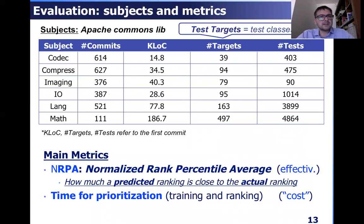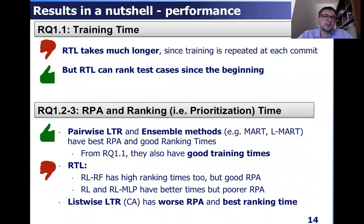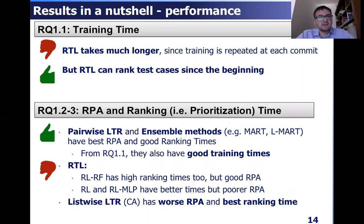Specifically, the algorithms are tested on Apache Commons libraries and the main metrics we adopt are the Rank Percentile Average (RPA), which tells how close a predictor's ranking is to the actual ranking — our effectiveness metric — and cost metrics including the time for prioritization, which covers both training time and ranking time. In terms of training time, reinforcement learning takes much longer because it performs online training repeated at each cycle. On the other hand, reinforcement learning can prioritize test cases from the beginning since it does not need to wait for a long training process before starting, so it can be used when we need to run tests at the first cycle.